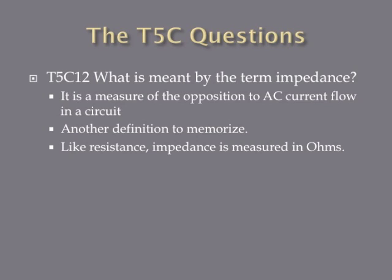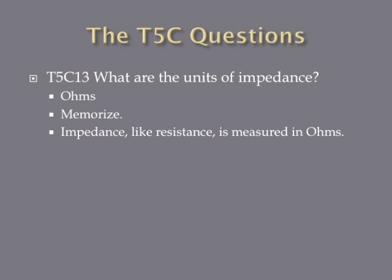What is meant by the term impedance? The answer is it is a measure of the opposition to AC current flow in a circuit — another definition you need to memorize. Impedance is a measure of the opposition to AC current flow in a circuit, and just like resistance, impedance is measured in ohms. What are the units of impedance? The answer is ohms. So resistance is measured in ohms, and so is impedance.